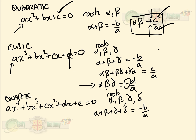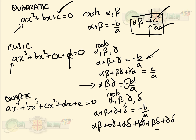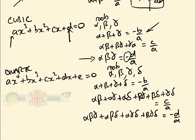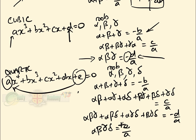The sum of all pairs multiplied together — alpha·beta + alpha·gamma + alpha·delta + beta·gamma + beta·delta + gamma·delta — equals c/a. The sum of all triple products — alpha·beta·gamma + alpha·beta·delta + alpha·gamma·delta + beta·gamma·delta — equals -d/a. And the product of all four roots alpha·beta·gamma·delta equals e/a, which is positive. So for a quartic and a quadratic the product of roots is plus the final constant divided by the first coefficient, while for a cubic it is minus.